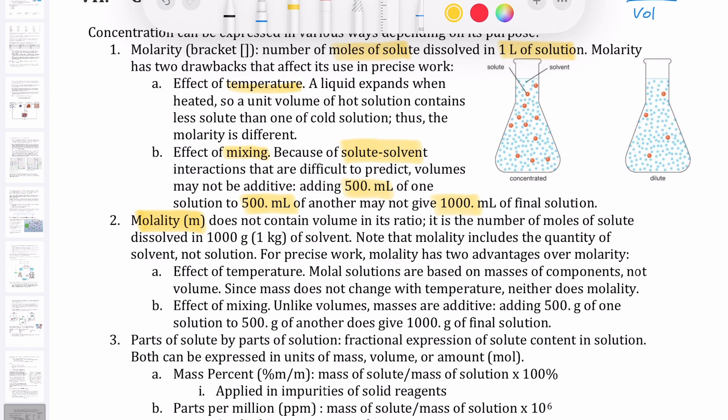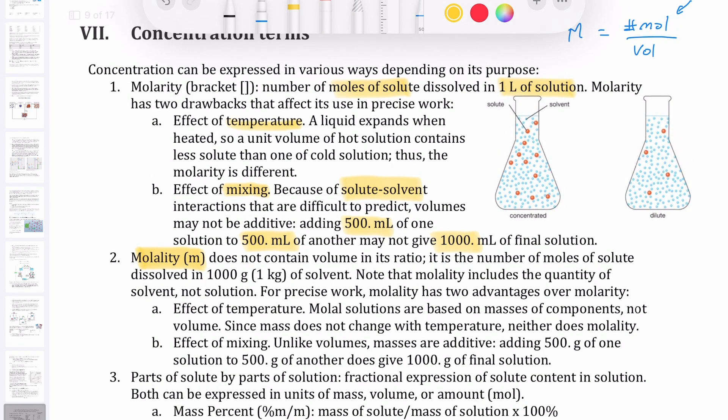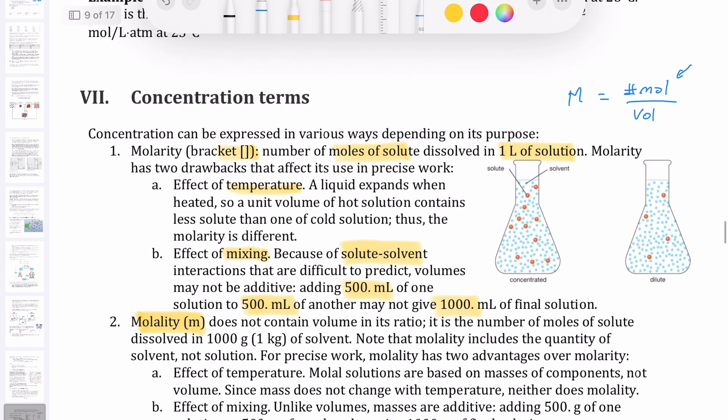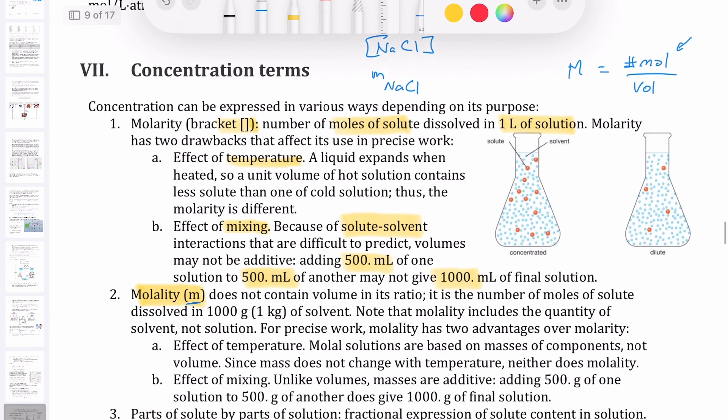So it sounds very similar to molarity, except that molarity is usually given that symbol that is expressed in a bracket. So you would say molarity of NaCl would be written this way. Molality, on the other hand, is using this little m, lowercase m. So if you want to calculate the molality of NaCl will be presented that way.